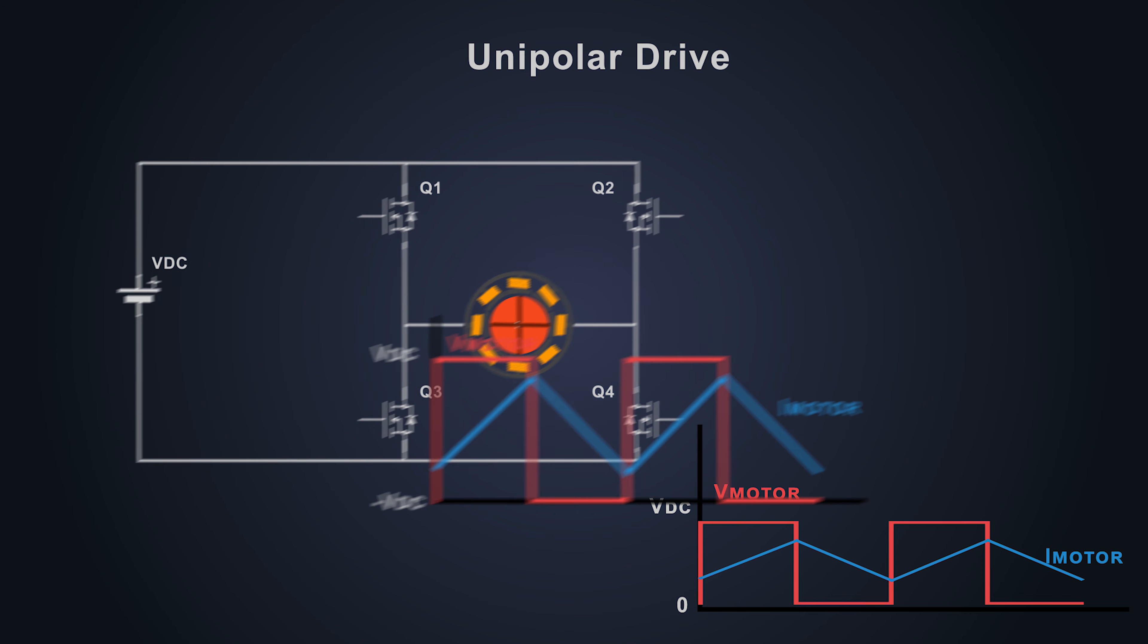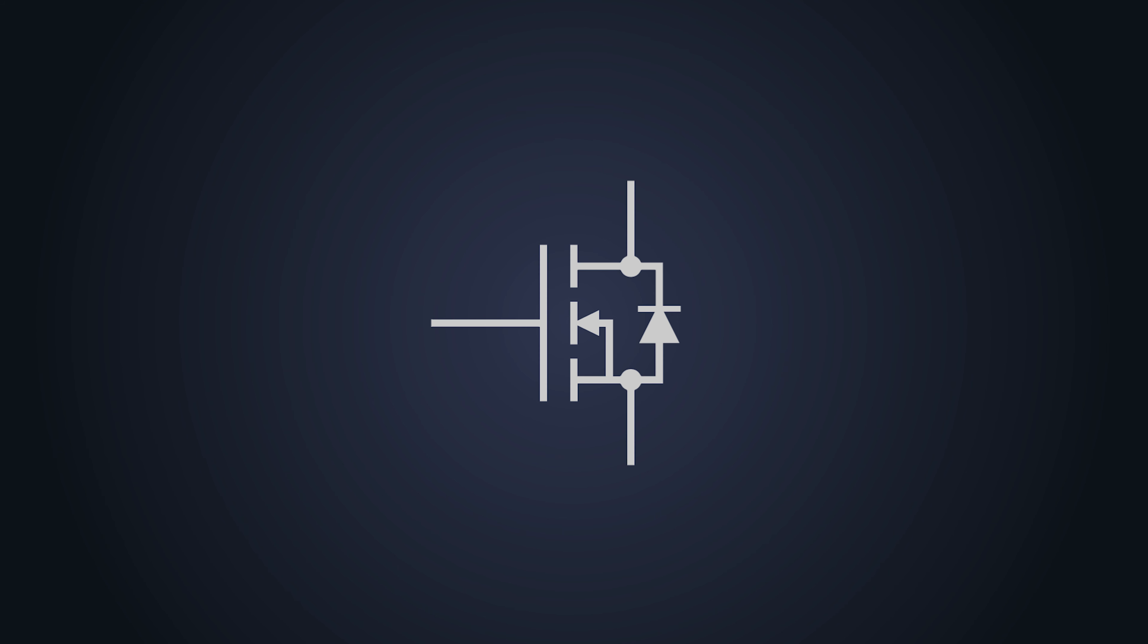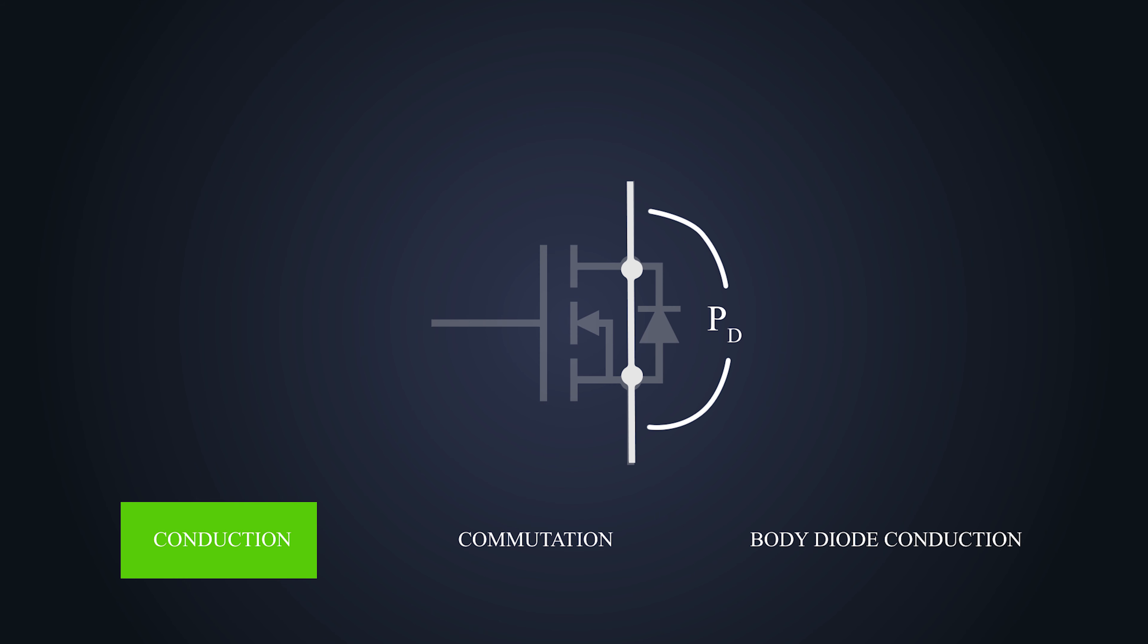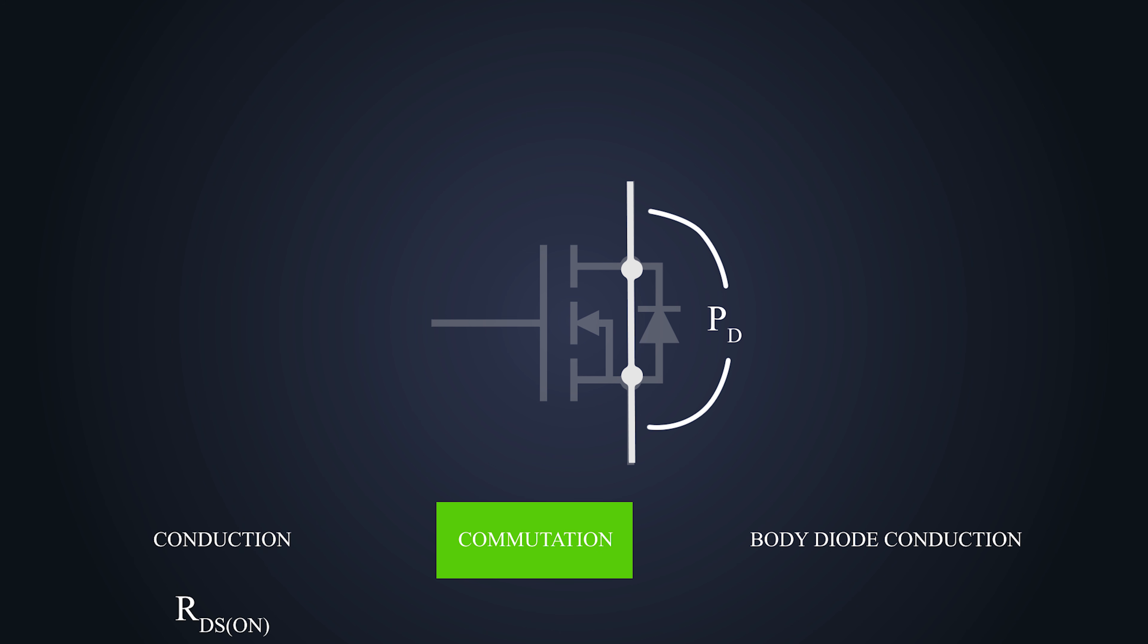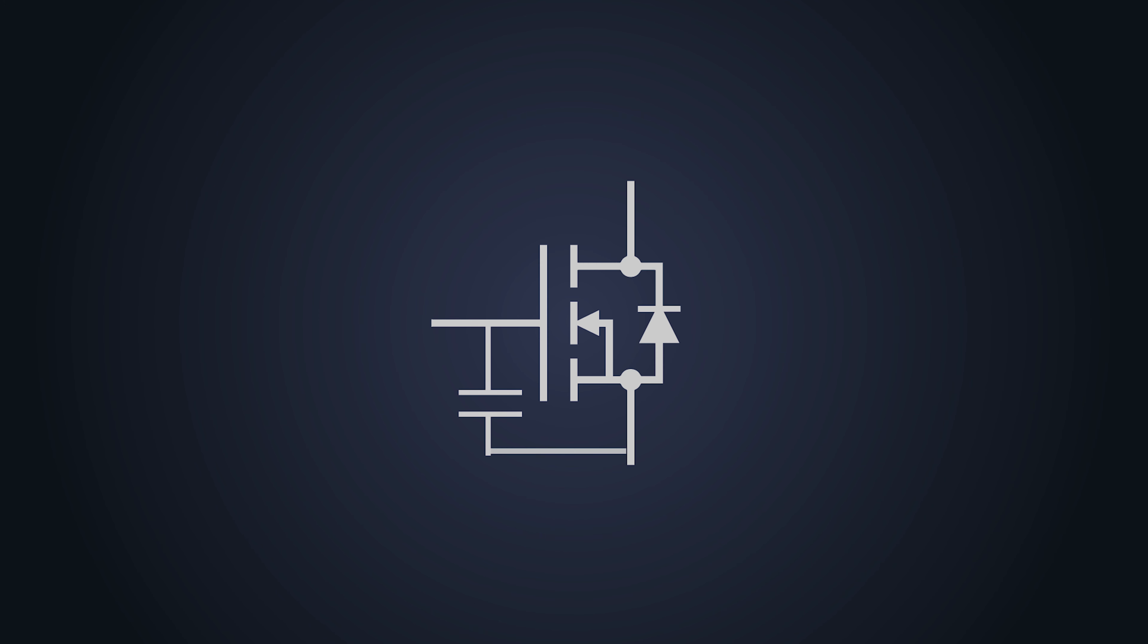Due to that, the ripple current in the motor would be way lesser than the bipolar driving technique. To select a MOSFET for such an application, we have to consider the power dissipation across it, which is caused by three things: conduction, commutation, and body diode conduction. The conduction power loss occurs when the MOSFET is on and this loss is because RDS on of the MOSFET. Commutation loss occurs during the time when the MOSFET state changes from turn on to turn off. And finally, body diode conduction occurs when the current flows to the body diode of the MOSFET. The input capacitance of the MOSFET should also be very less if our H-bridge is being used for fast switching application.